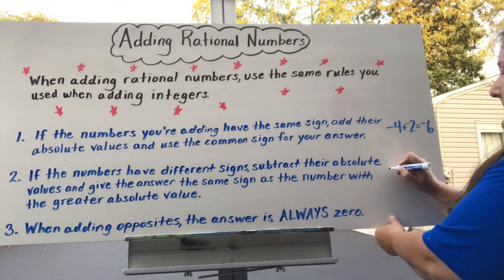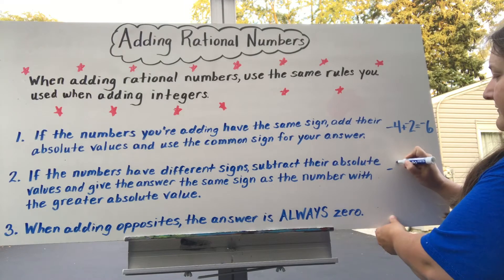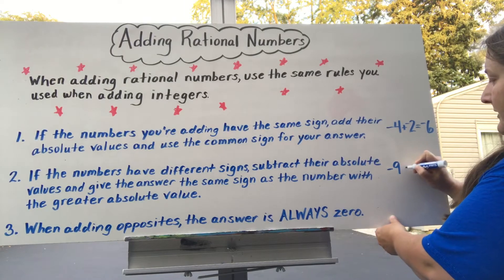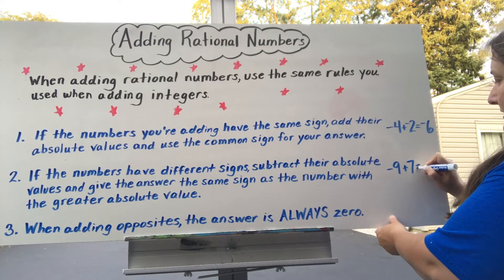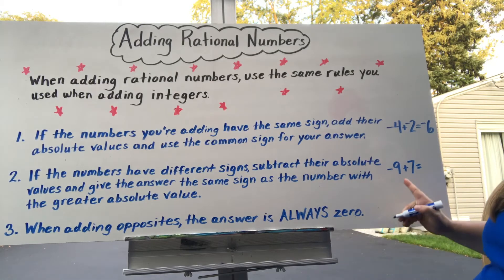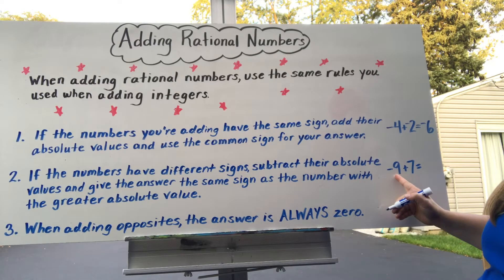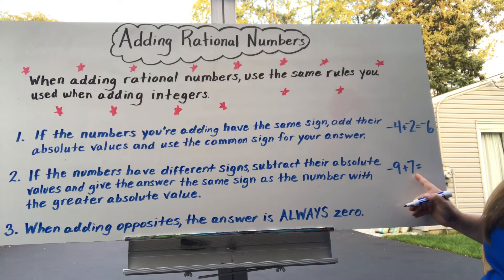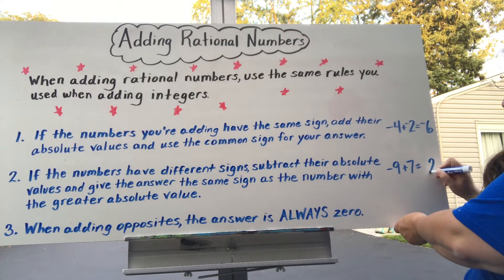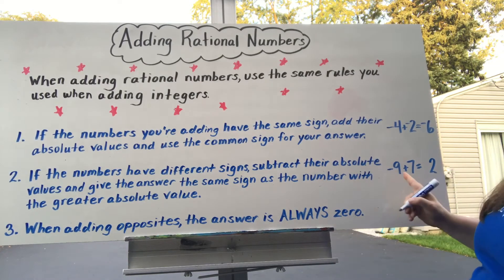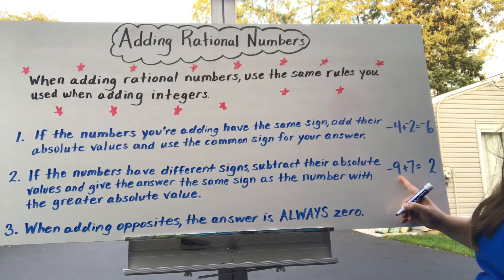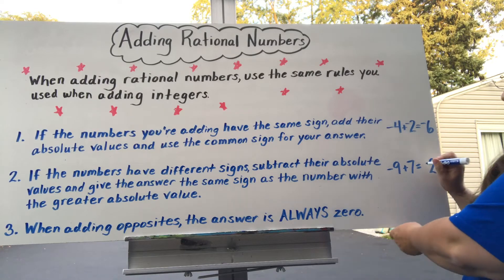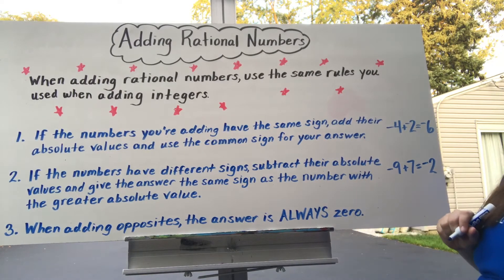An example of that would be negative 9 plus 7. Since one of these is negative and one is positive, I subtract their absolute values. 9 minus 7 is 2, and since 9 has the greater absolute value and 9 is negative, my answer will be negative 2.